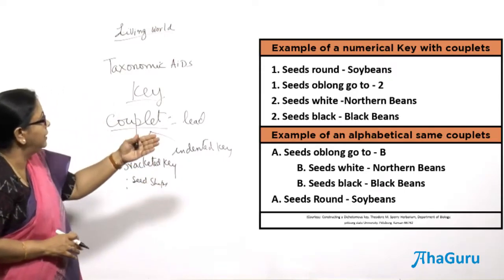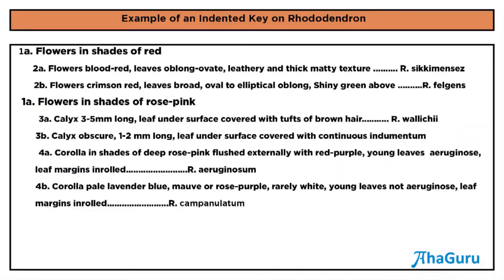If you look at the indented key, it is a little different. In an indented key, the couplets are not together — for example, 'flowers in shades of red' is separated from 'flowers in shade of pink.' In between the two contrasting characters of the couplet, you will see some more features listed together. That is called an indented key. Both types are used for classifying animals and plants.